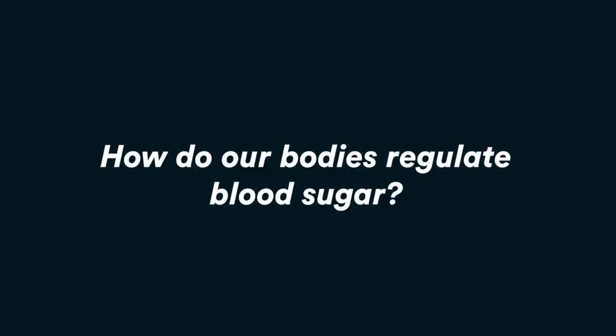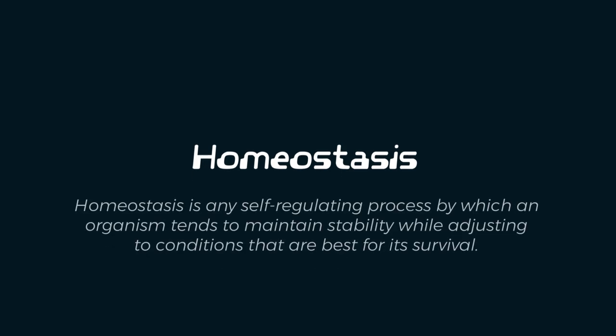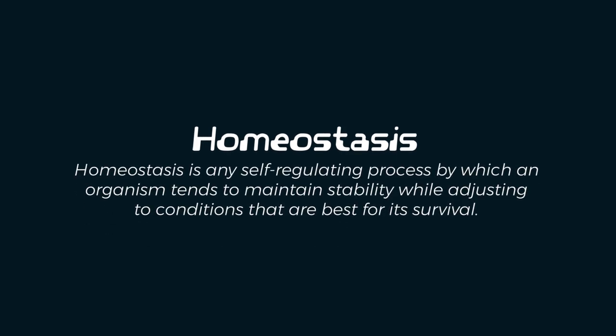So one type of homeostasis that we're talking about is: how do our bodies regulate blood sugar? But what is homeostasis? Homeostasis is any self-regulating process by which an organism tends to maintain stability while adjusting to conditions that are best for its survival.